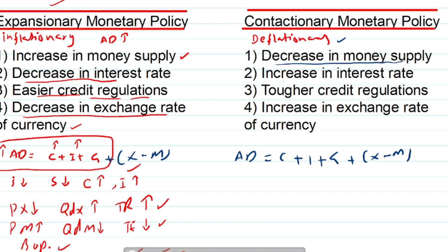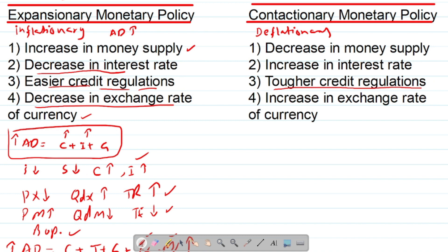When interest rate is high, people save more money, so saving will rise, consumption will fall, and investment will also fall. When investment and consumption decrease, aggregate demand decreases. Tougher credit regulations are another tool of contractionary monetary policy — when the government makes it difficult for people to get loans from financial institutions in terms of procedures, fewer people get loans and as a result consumption falls and investment decreases.